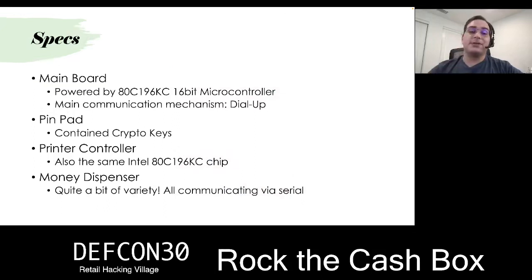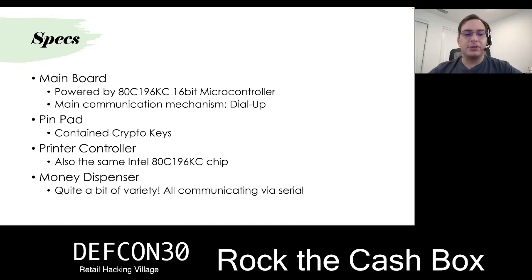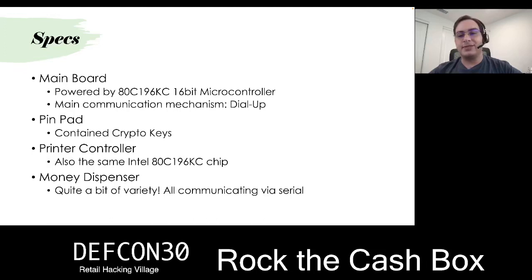The specs: it's a pretty old system, powered by a 16-bit microcontroller. Main communication is dial-up. The pin pad contains the crypto keys — if you remove the pin pad, it resets and nothing works anymore. The printer controller uses the same processor and is an independent board, allowing you to update the main board while keeping the dispenser and printer controller the same. All of it communicates via serial. People have tried to attack the serial protocol, but that requires physical access to the ATM, and once you have physical access, all bets are off.